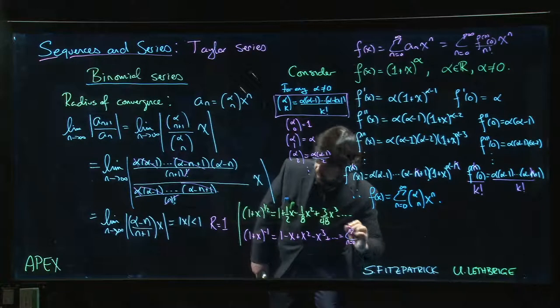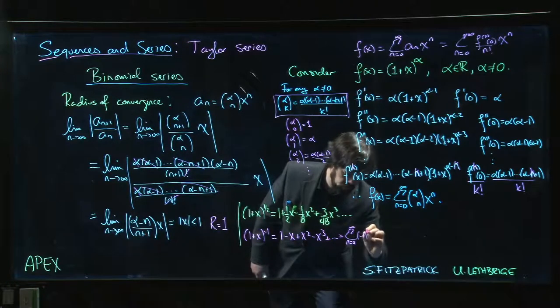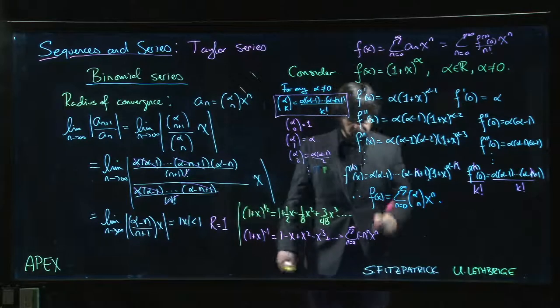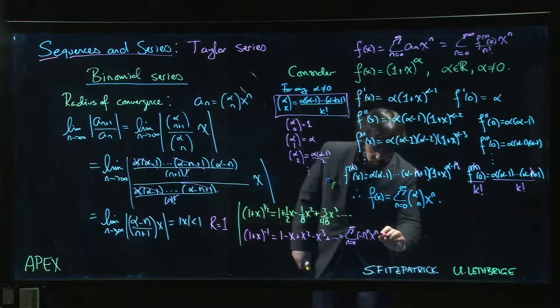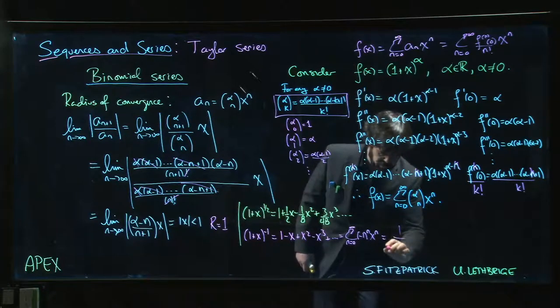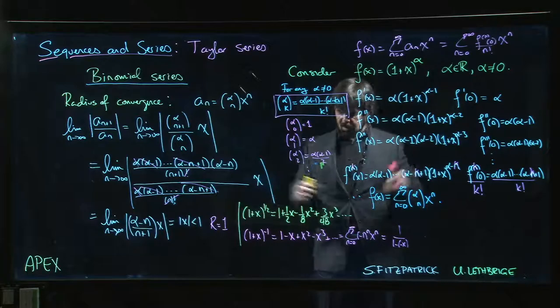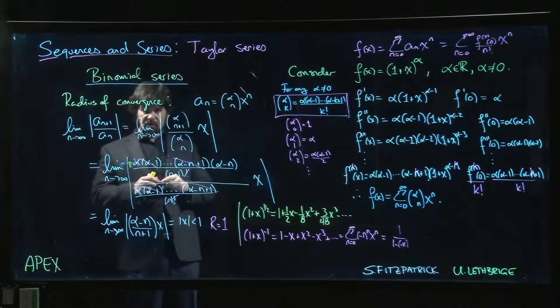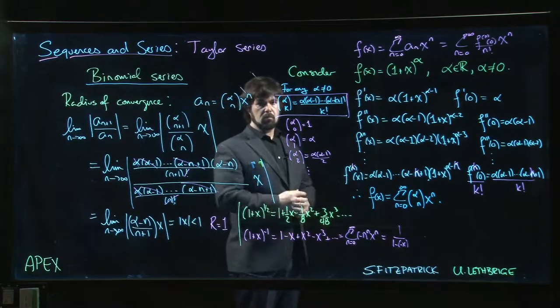You get the sum. So you can work out with a bit of work that what you get here is actually just the sum (-1) to the n times x to the n. And actually, geometric series formula says that if the absolute value of x is less than 1, we can write that - geometric series formula says that's, well, this is (-x) to the n. So it's 1 over (1 minus (-x)), and that's exactly where we started. So the binomial series formula actually agrees with the geometric series formula in the case where your power is minus 1, which is interesting.